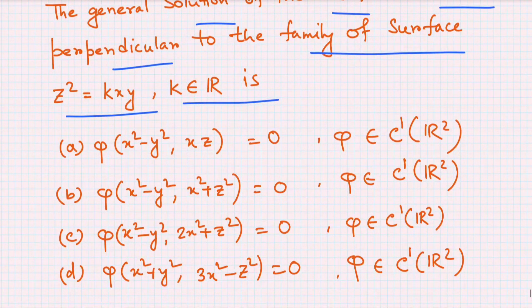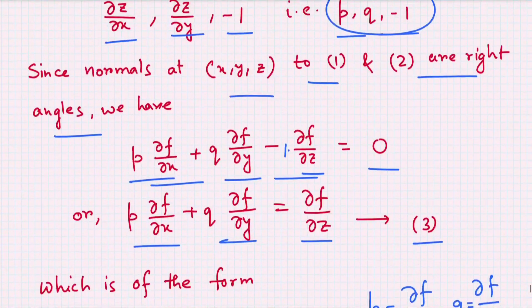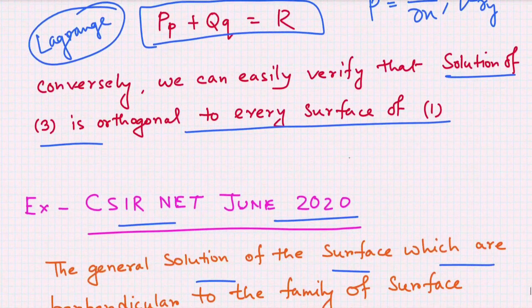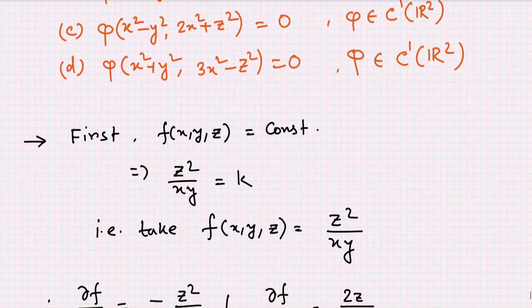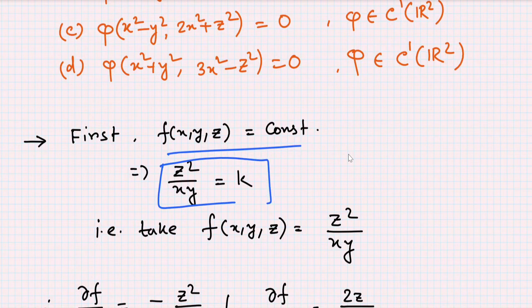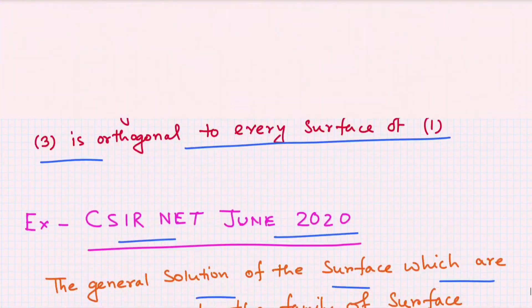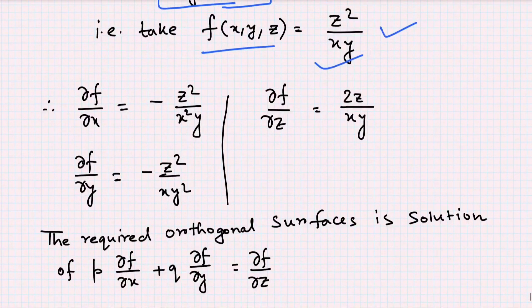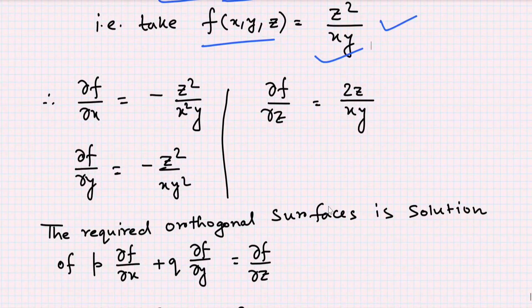We first write the equation in the form f(x,y,z) = constant. Here we take f(x,y,z) = z²/(xy), set equal to a constant. Now we find ∂f/∂x = −z²/(x²y), ∂f/∂y = −z²/(xy²), and ∂f/∂z = 2z/(xy).